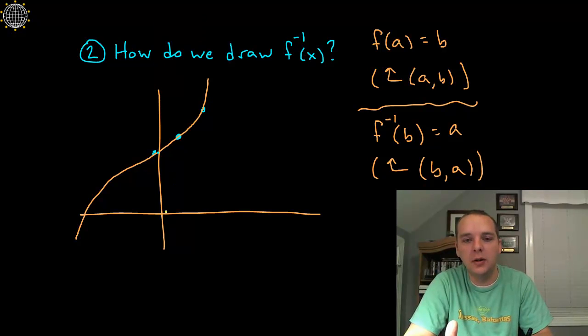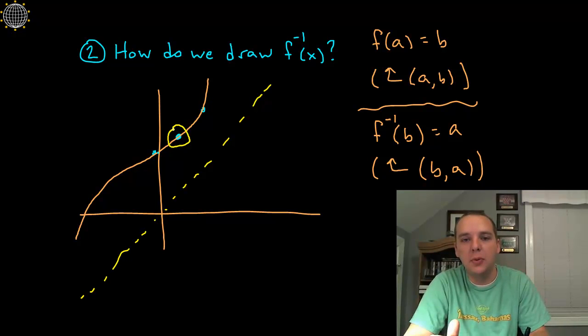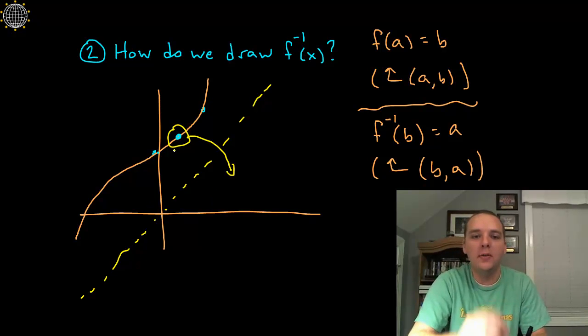and let me erase all this here. If I graph y equals x, which I'll do real quickly here, it's this forty five degree line right here. You can see that was precisely what was happening. Points on this side of the line were hopping to this side of the line, one five was jumping to five comma one, for example.